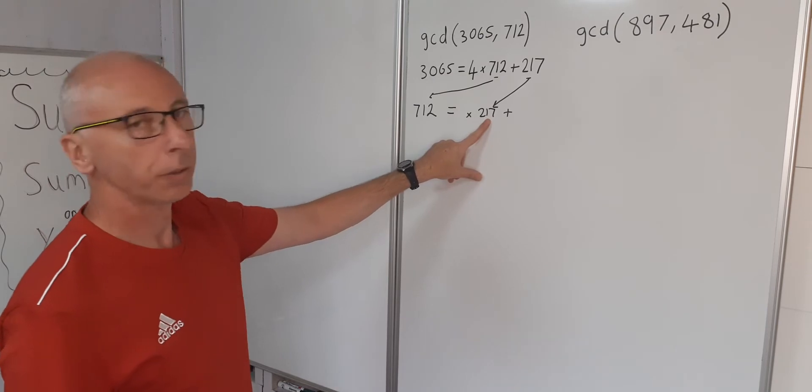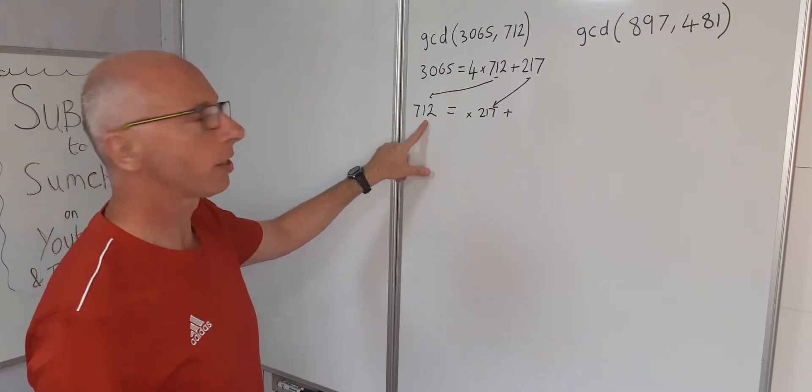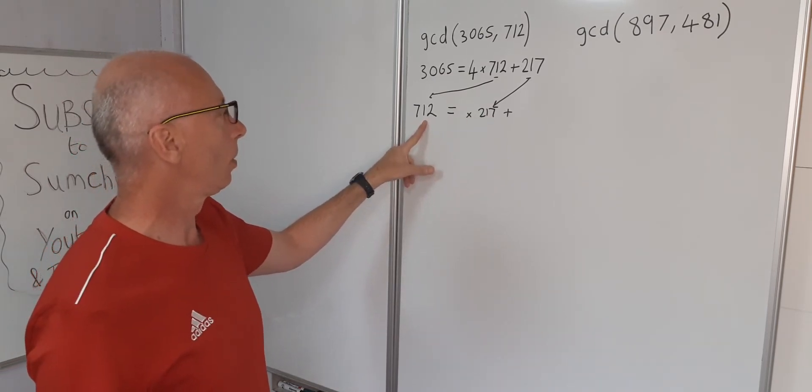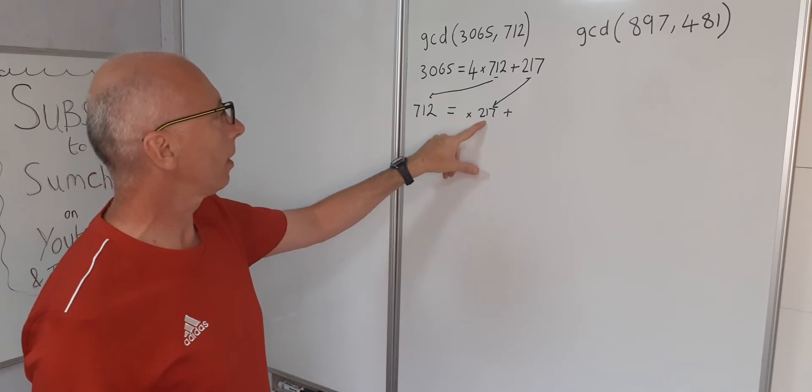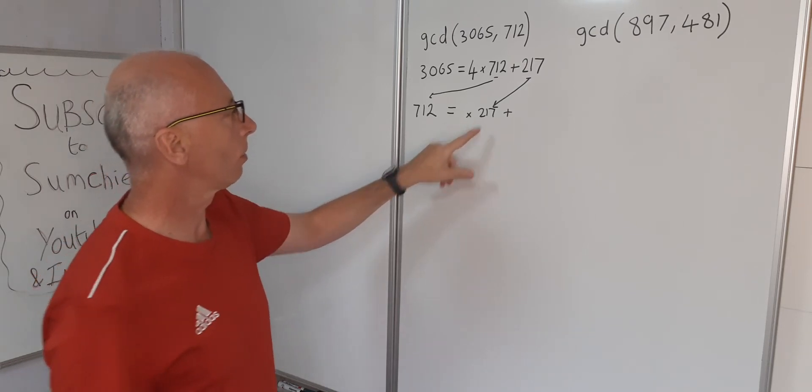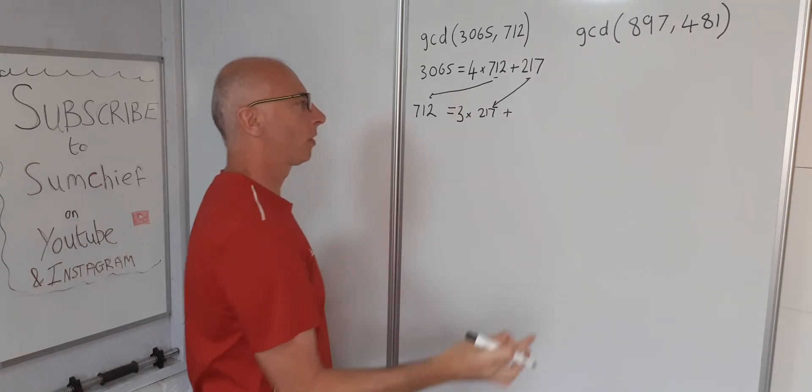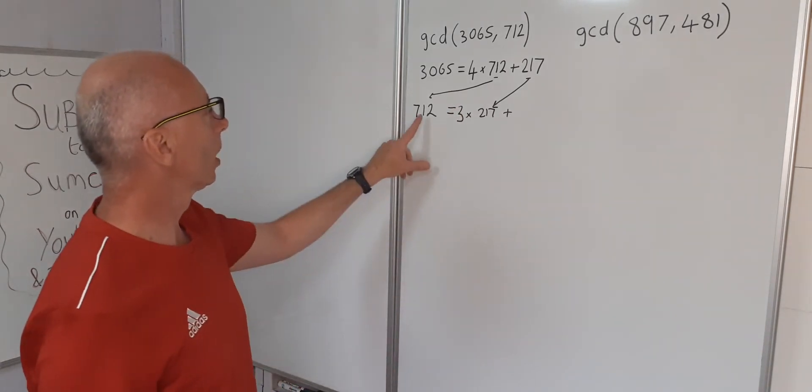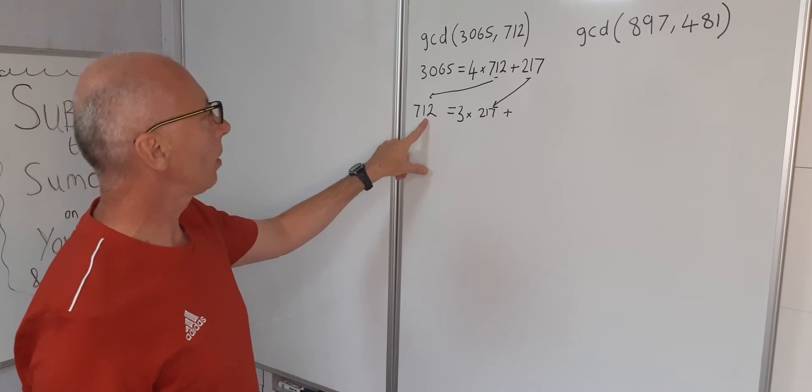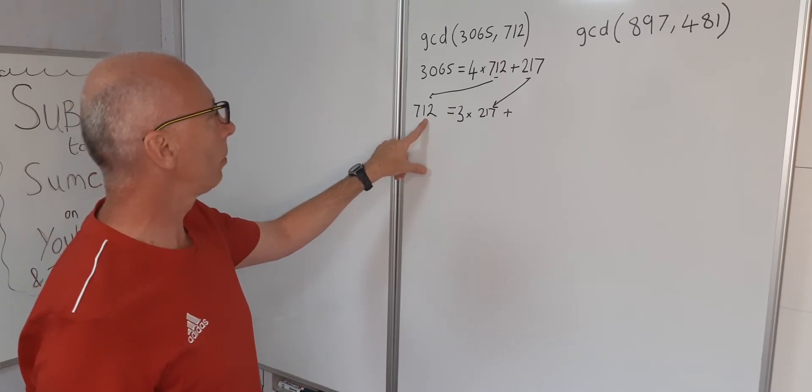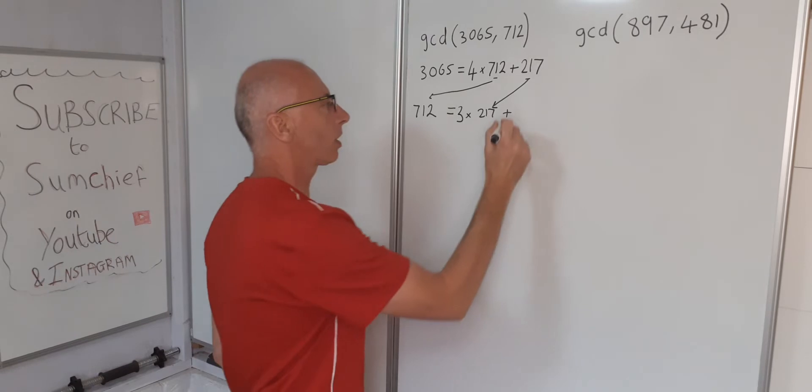Okay, so 217 into 712 with a remainder. We can see if we multiply that by 3 we get 651. 3 times 2 is 6, 3 times 17 is 51, so 651, and that will give us 61 left over.